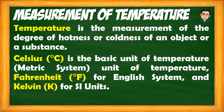The basic unit of temperature under the metric system is degree Celsius — we often hear this in weather reports, and also when checking body temperature for fever. For the English system, we use degree Fahrenheit, commonly used in baking — when baking in an oven or microwave oven, degree Fahrenheit is usually the unit used. Kelvin is the SI unit.